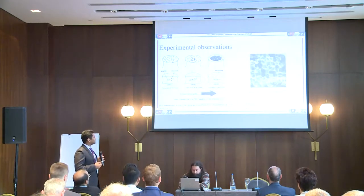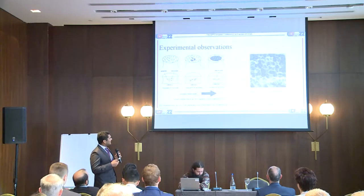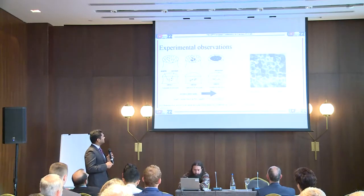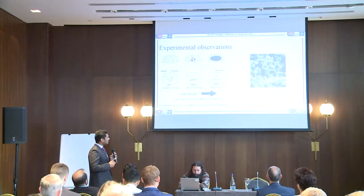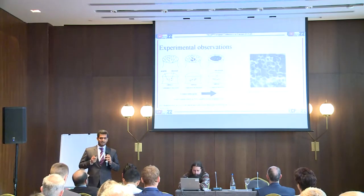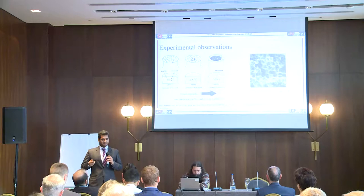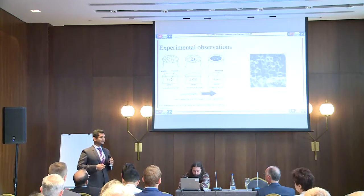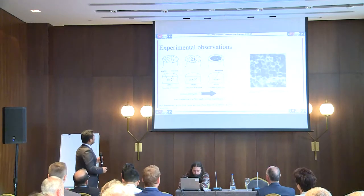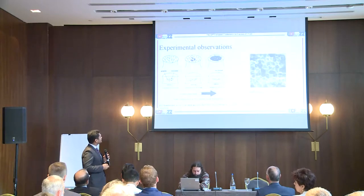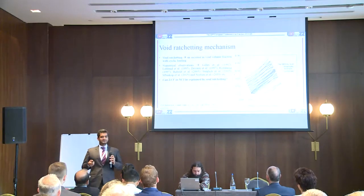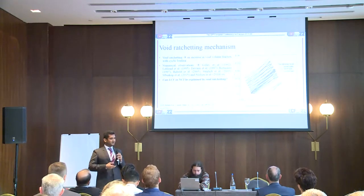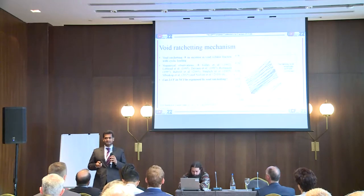Here we can see the fractography image of GJS-400 after being subjected to a low-cycle fatigue test. We can see the dimple structure of the nodular cast iron material. This dimple structure clearly states that there is severe plastic deformation happening between the particles — ligaments experiencing severe plastic deformation — which leads to cyclic necking. To summarize this experimental observation, this process from generation of micro-voids to their cyclic coalescence is called void ratcheting, and it is the main idea behind this study.